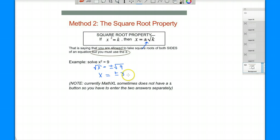So we end up with two answers, positive 3 and negative 3. On a test you can write it as plus minus, but MathXL doesn't have a plus minus, so you'll have to list it as 3, negative 3.